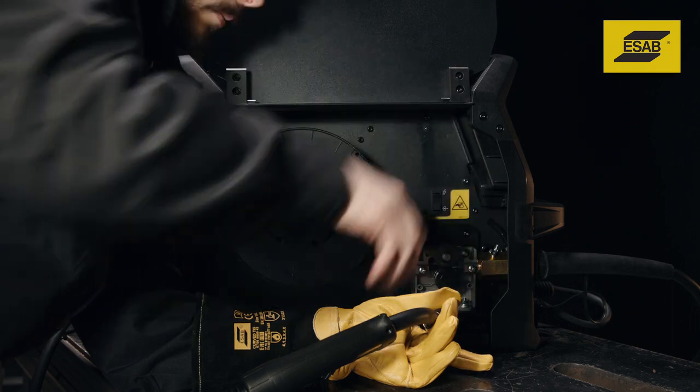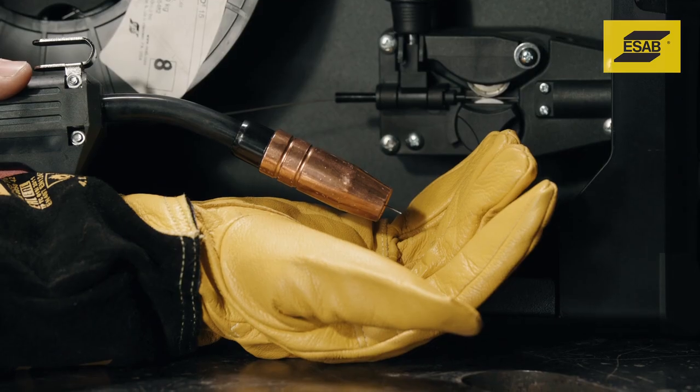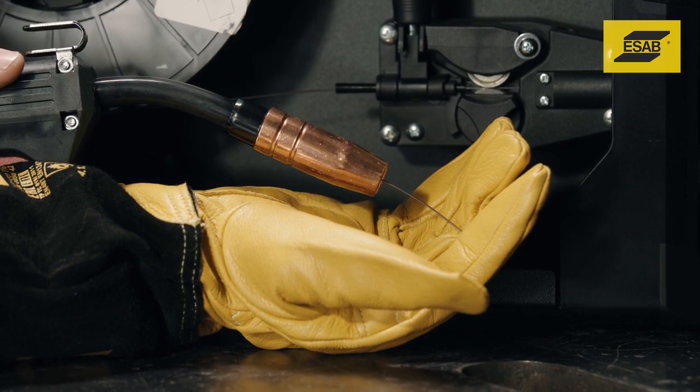Now hold the gun two inches from the surface. The wire should feed out and bend. This indicates proper tension.